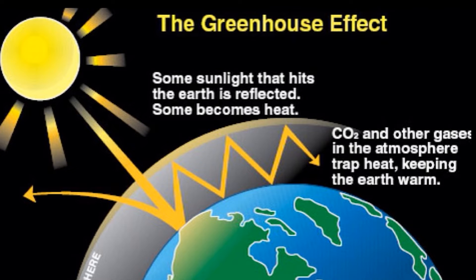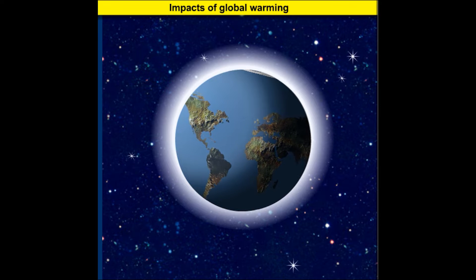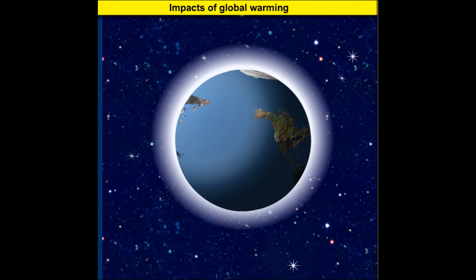Global warming is the slow increase in the average temperature of the earth's atmosphere because an increased amount of heat striking the earth from the sun is being trapped in the atmosphere and not radiated out into space. The increase in average global temperature has caused a dangerous global warming process that is threatening our current environment.